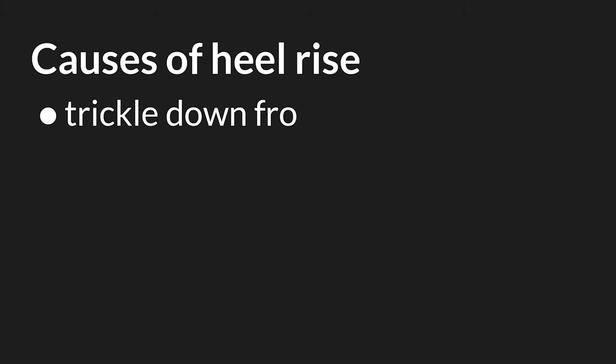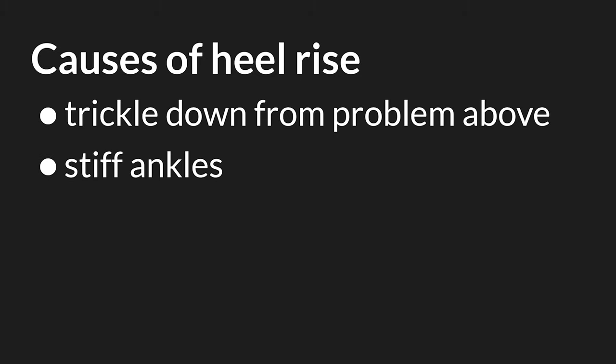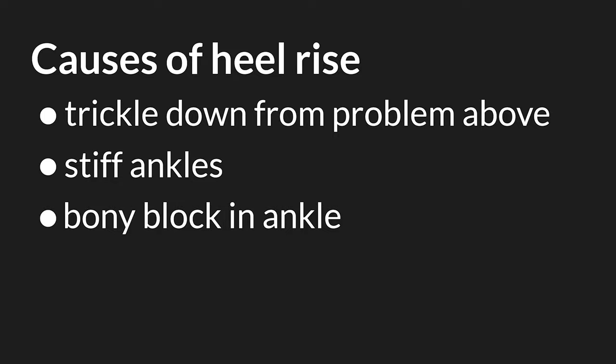Number one: something further up the chain has gone wrong and the ankles are trying to help out — a stiff posterior hip capsule pushed the body's mass forward and the calves kick on to prevent toppling over. Number two: the calf muscles and Achilles tendon are stiff and don't want to be stretched. And number three: the bones of the ankle joint don't allow for full dorsiflexion. Stay tuned for later where I'll discuss testing for tight ankles and what to do about it.